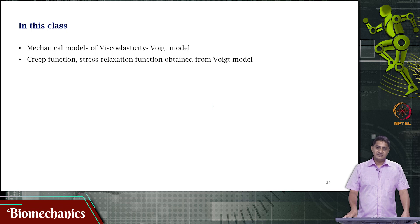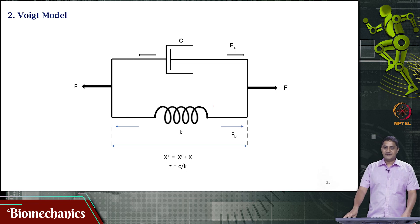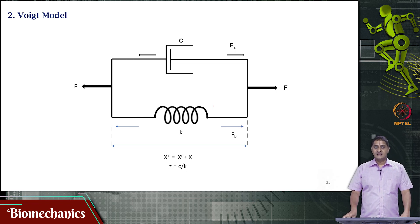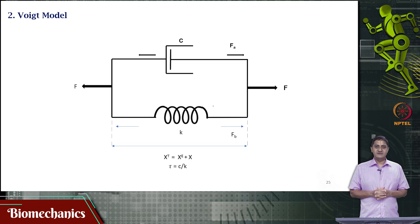As we did with the Maxwell model, we will be looking at creep and stress relaxation functions for the Voight model. This is the Voight model — a dashpot in parallel with the spring. In the Maxwell model, what we had was a dashpot in series with the spring. Here, having the dashpot in parallel with the spring means there will be a qualitative difference in the response of this model compared with the Maxwell model.